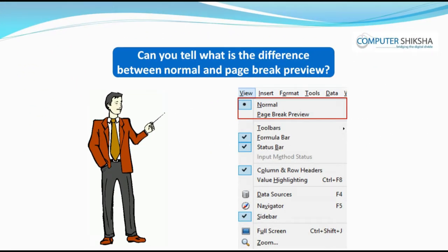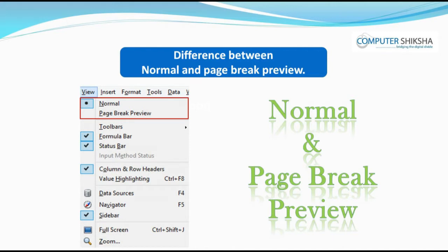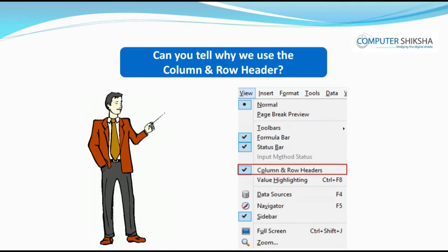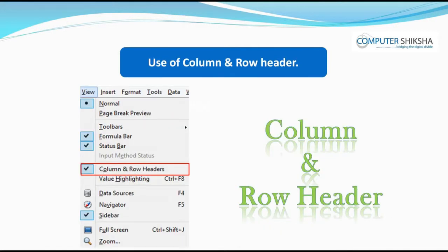Can you tell what is the difference between Normal and Page Break Preview? In the Normal view, you can see your entire sheet, whereas in the Page Break Preview, you will be able to see only till the place you have typed and you will not see the entire sheet. With the help of the Column and Row Header, you can know more about your columns and rows and you will be able to get the address of your cell.